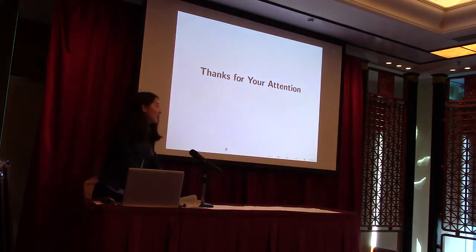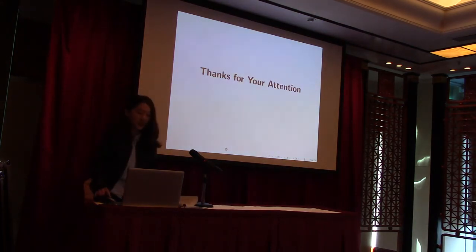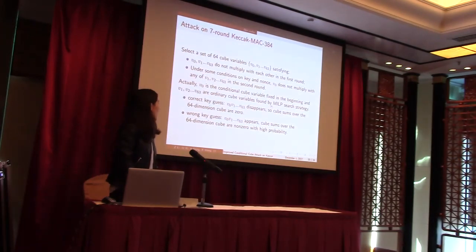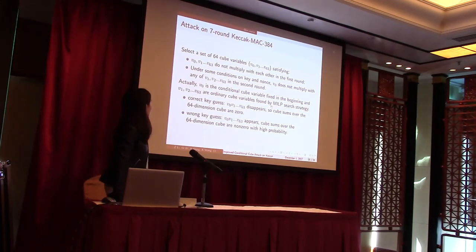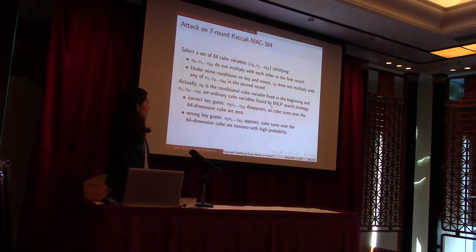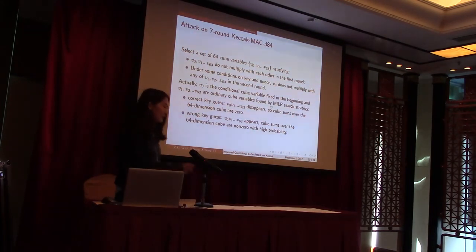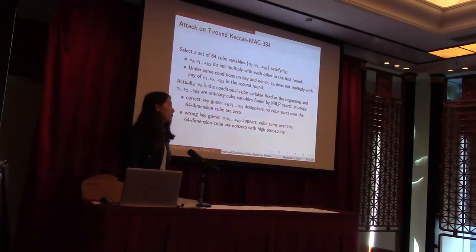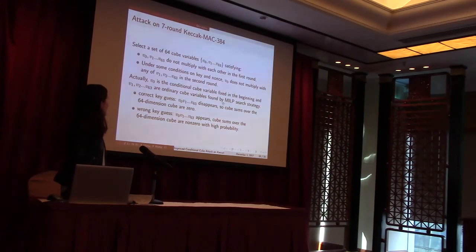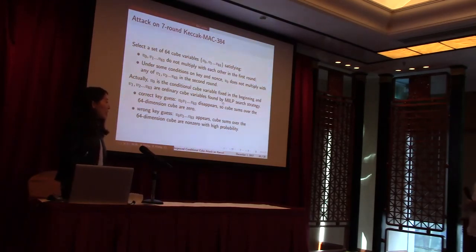Can you go back to page 20? Your search says that the objective value is 66, right? Yeah. So why do you select 64 variables? What's the gap in there? It's based on the Keccak permutation's property. In the first round, they will not multiply, and the following six rounds will be 64 degrees. Okay, thank you.